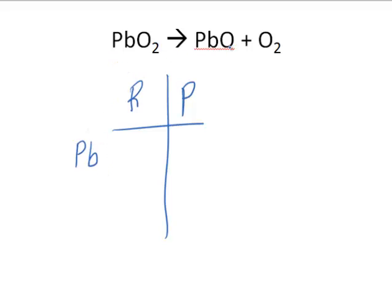This equation has Pb's (lead) and O's in it. I count the Pb's on the reactant side — there's one. I count the Pb's on the product side — there's one. I count the oxygens on the reactant side — that's two. I count the oxygens on the product side — that's three (two here and one here). You notice that the oxygens are unbalanced: two oxygens on the reactant side and three on the product side.